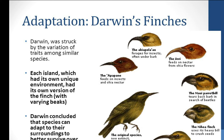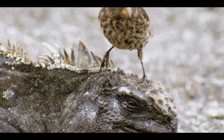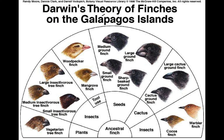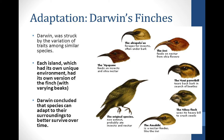He also noticed that a type of bird species called the finch, which lived on the islands, were adapted to the food on which they were feeding on the different islands. He noticed great variation among the animal populations. His theory was that the finches all developed from a common ancestor, but the environment forced them to adapt in order to survive.